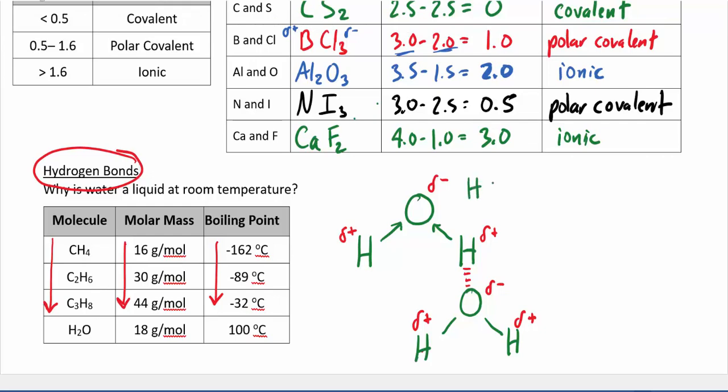Between these molecules, that attraction is called a hydrogen bond — the slightly positive hydrogen from one water molecule wants to hang out with the slightly negative oxygen from another. This continues across billions and trillions of water molecules, causing them all to want to stick together. As a result, it takes a lot of energy to turn water into a gas, giving it a much higher boiling point than you'd expect for such a small molecule. Hydrogen bonds end up being super important in chemistry and biology. That's it for chemical bonds — thanks!